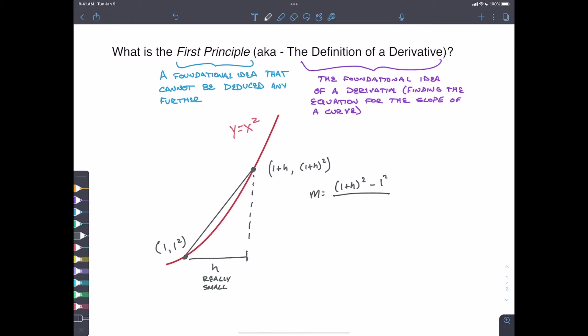One squared is, or one squared. We'll just do that over y two, one plus h, minus y one, which is just one.